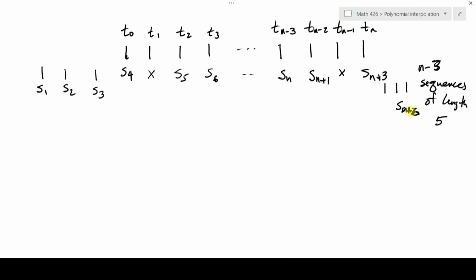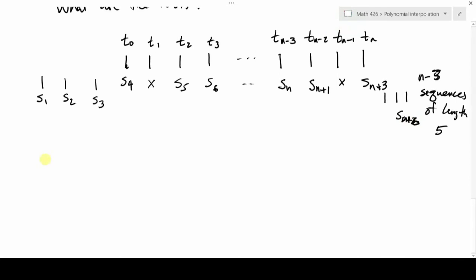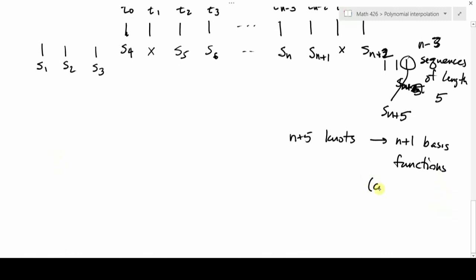So now the last knot sequence is n plus 6, n plus 5, n plus 4, n plus 3. Now I have n plus 5 knots, which is 4 more than I have nodes, which means I get n plus 1 basis functions. And those basis functions are cubic b splines.